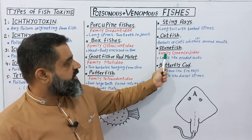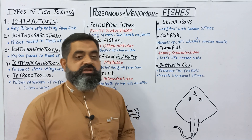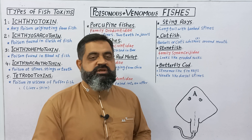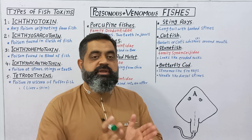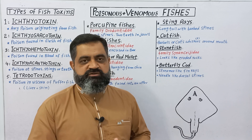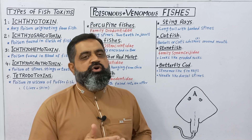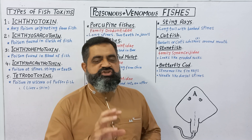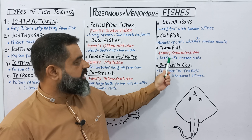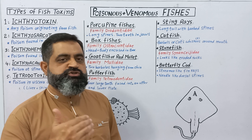Stonefish belong to family Synanceiidae and look like eroded rocks. These are very dangerous fishes present at the bottom of the oceans. They are camouflaged as bare eroded rock, and you can hardly distinguish them as a fish. When some other fish, animal, or human being steps on or encounters this fish, it can inject powerful poison inside the predator. So be careful while walking in the ocean or on the ocean shore.